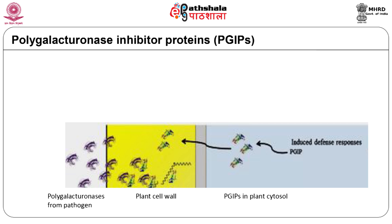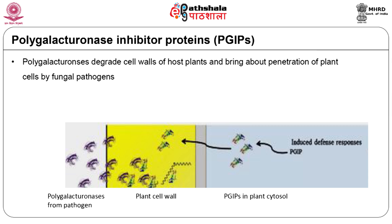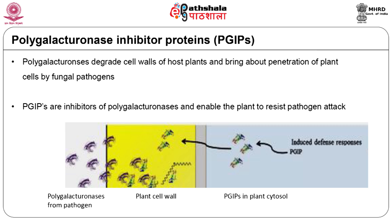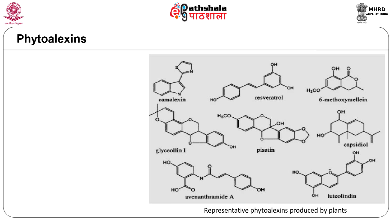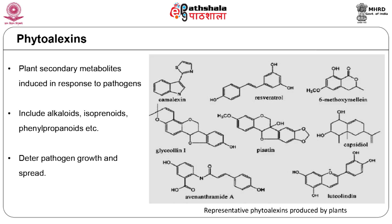Polygalacturonases are enzymes produced by fungi which degrade plant cell wall constituents. Polygalacturonase inhibitor proteins (PGIPs) are inhibitors of polygalacturonases. These inhibitors interfere with the enzyme activity and prevent penetration of host cells by the pathogen. Phytoalexins are the products of plant secondary metabolism that are synthesized upon exposure to external stimuli like pathogens, elicitors or wounding. They include compounds like alkaloids, isoprenoids and phenylpropanoids which show antimicrobial activity.